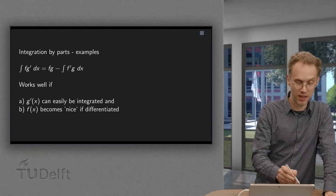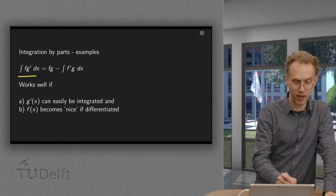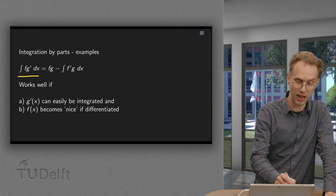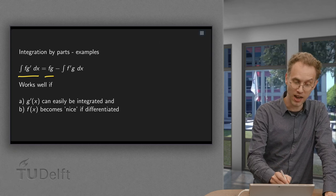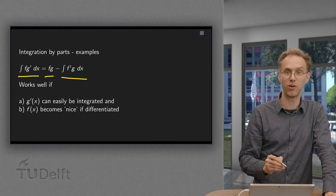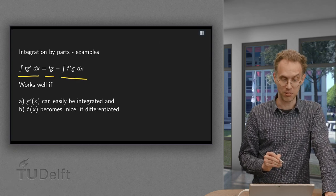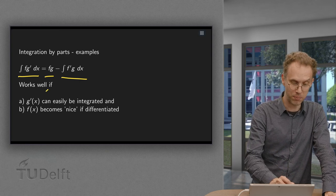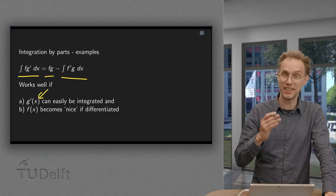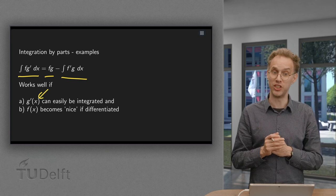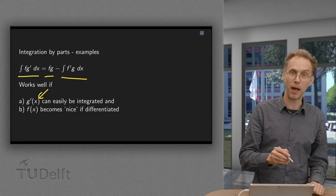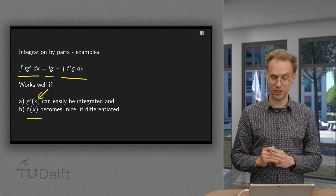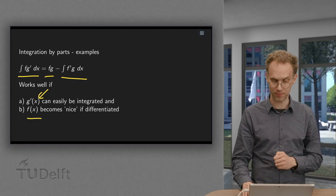So what was the rule again? The integral of f times g prime becomes f times g, minus a new integral of f prime times g. This works well if g prime can be integrated easily, because you need g, and preferably f becomes nice once you differentiate it.